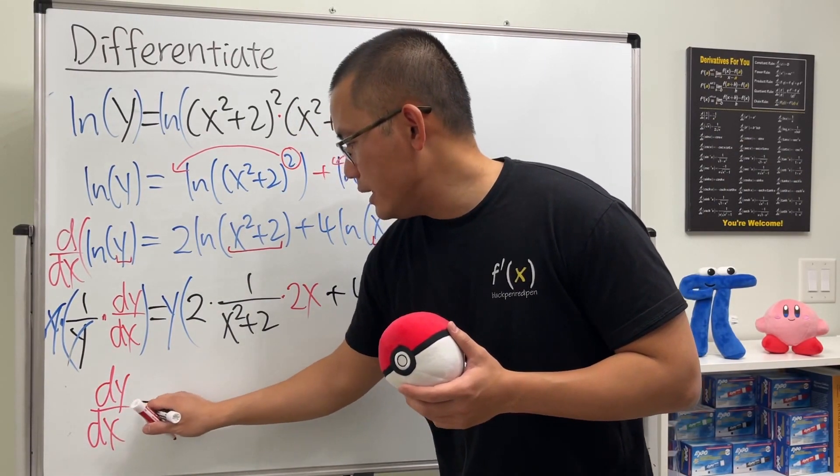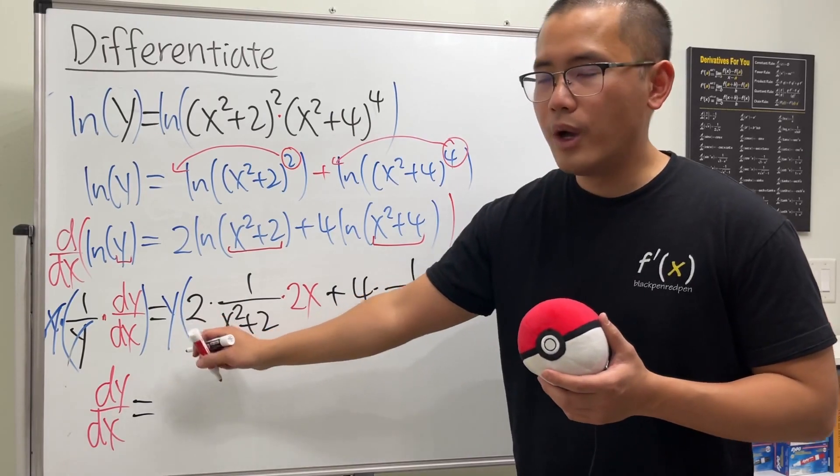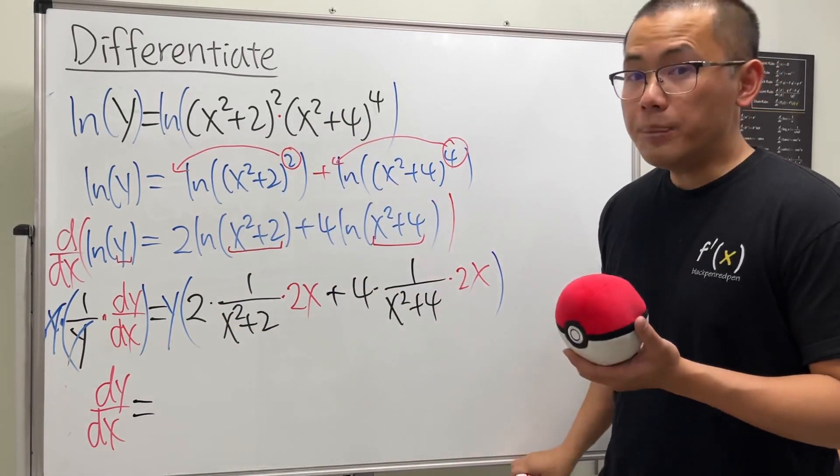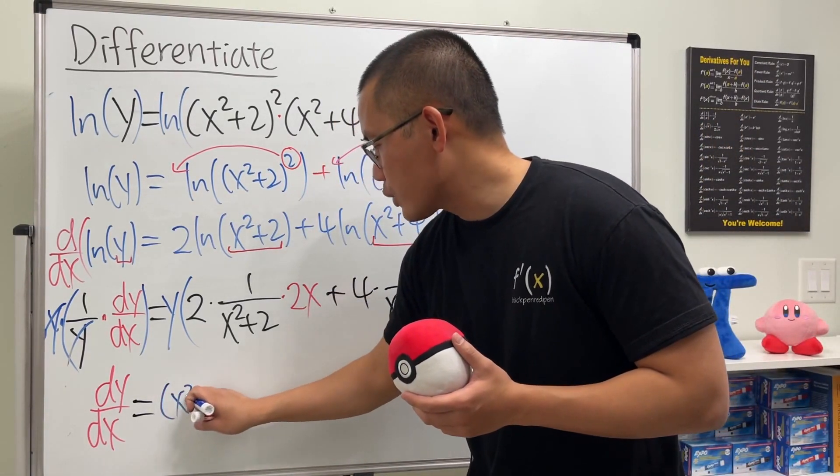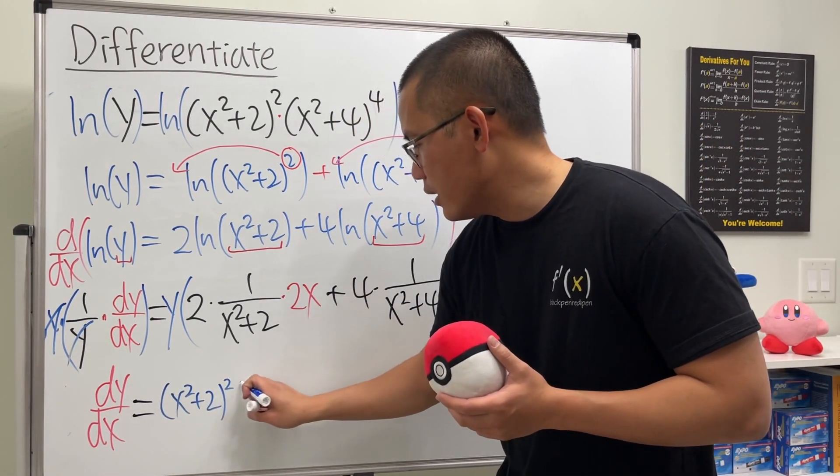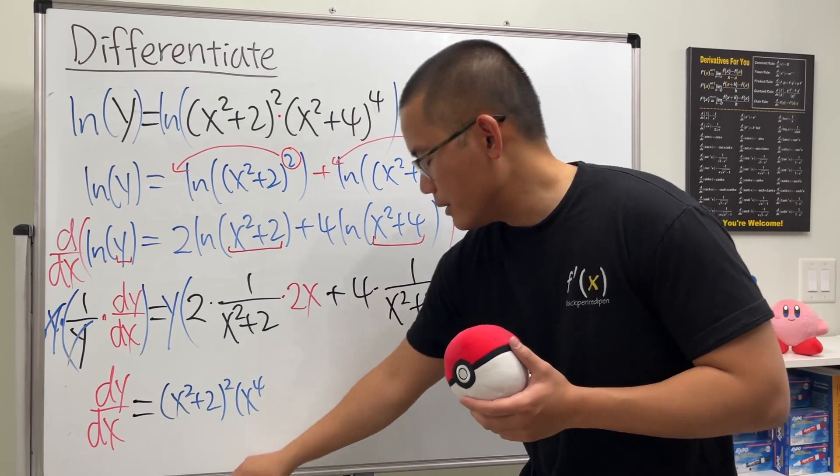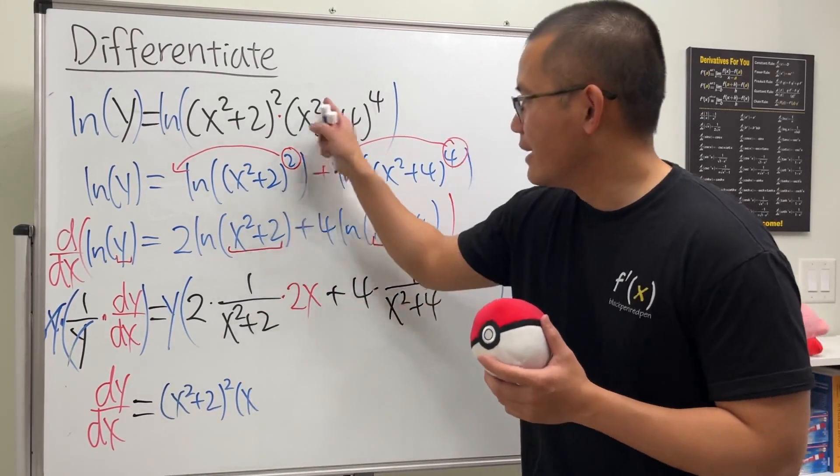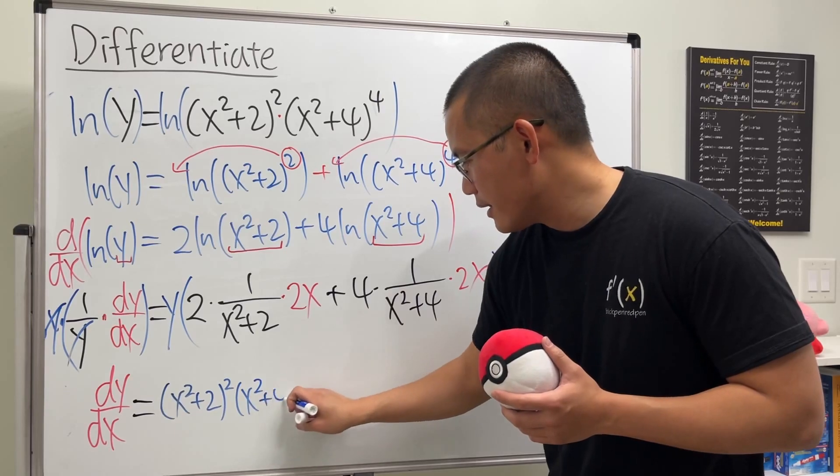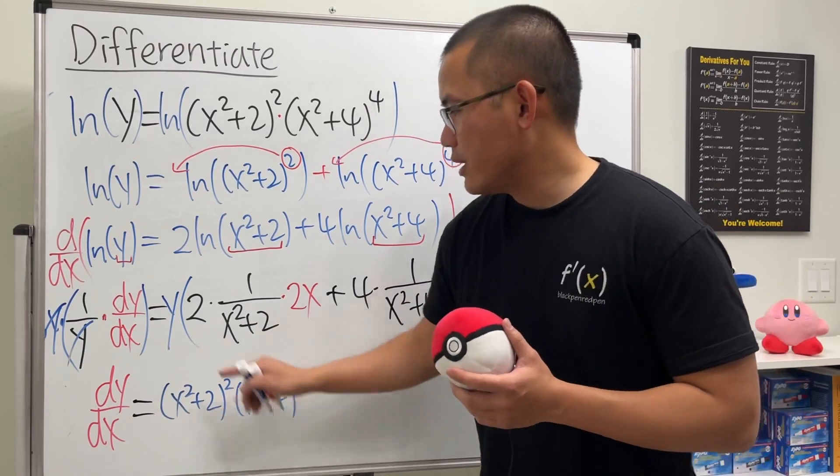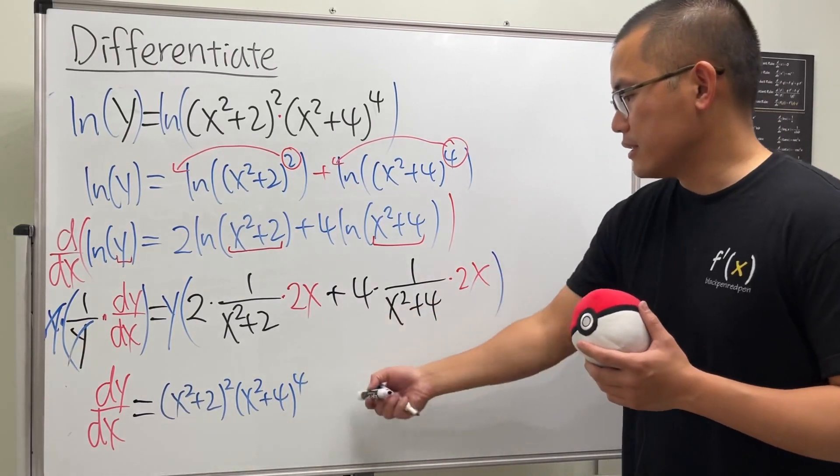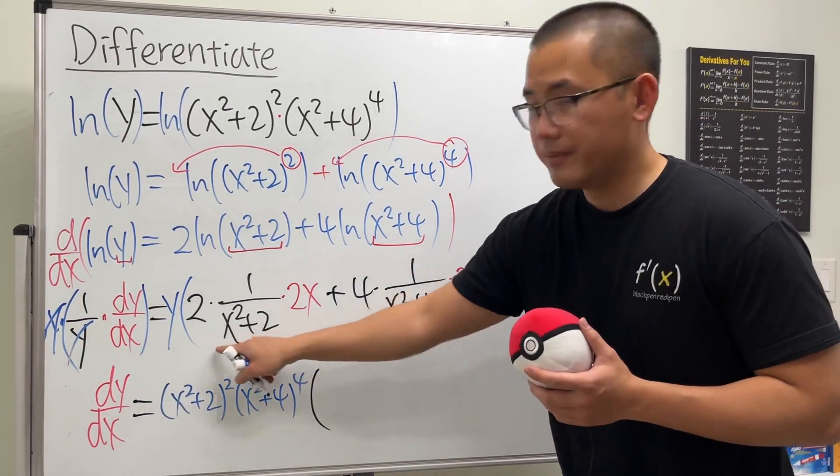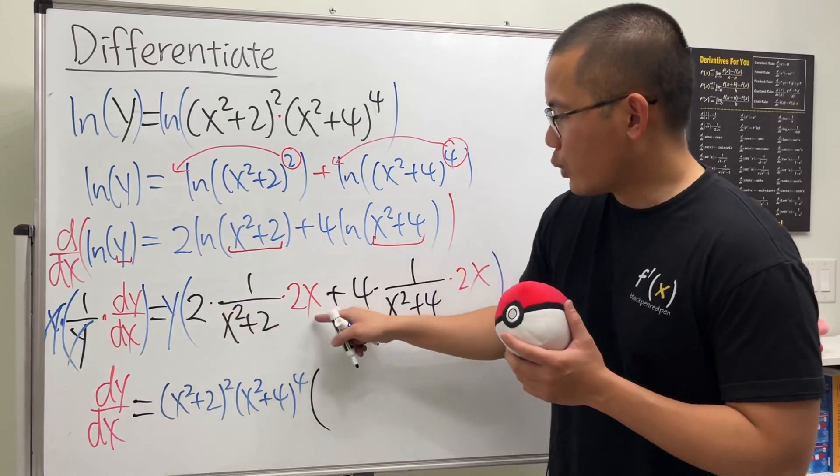And that will be equal to the y. Well if you look back to the original equation we can put that down for the y, so we will have (x² + 2)² times (x² + 4) to the fourth power. This right here is for the y and then we'll just need to write this down inside of another parentheses.